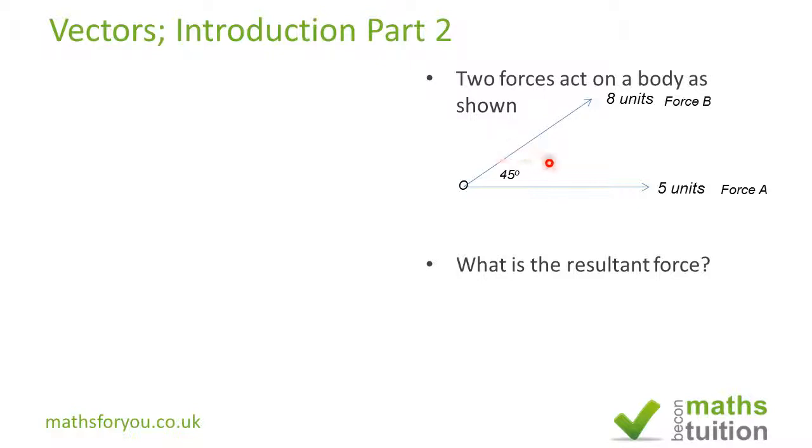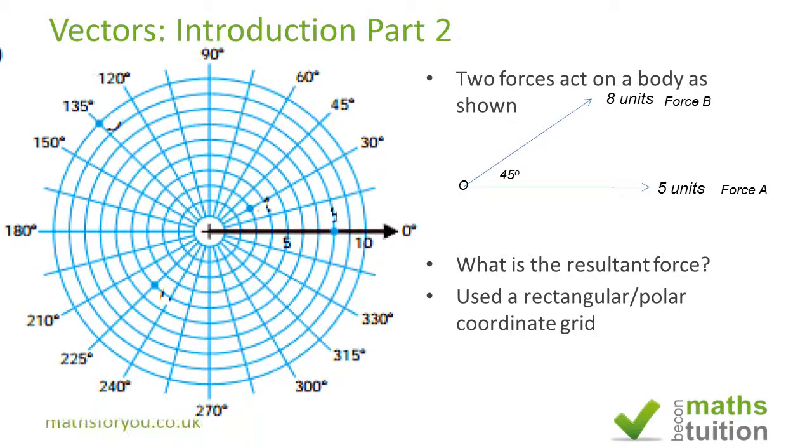Effectively what I'm going to do is add this—pull it from there and add it into that. To make life easy, I'm going to use a rectangular polar coordinate grid. First, I'll have Force A which is horizontal and therefore at zero degrees. Now I'm going to add Force B.